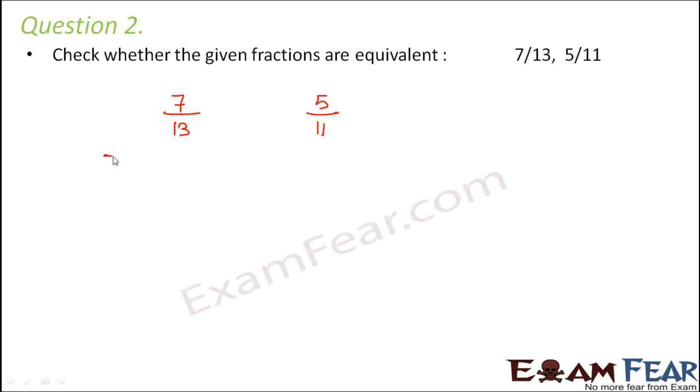So 7 by 13, when you look at the factors of 7, it is 1 and 7. When you look at the factors of 13, it is 1 and 13. So that means that they do not have any common factor other than 1. So 7 by 13 is in its simplest form. What about 5 by 11? The same thing holds true for 5 by 11 also. So 5 by 11 is also in its simplest form.